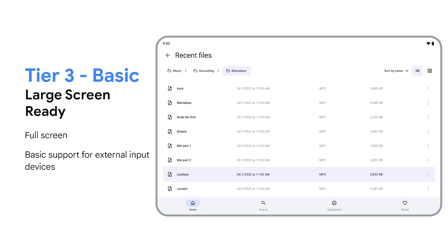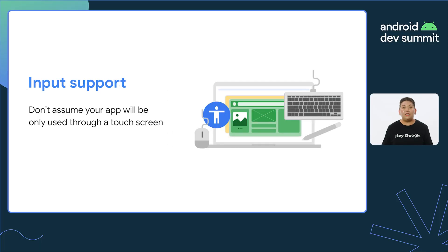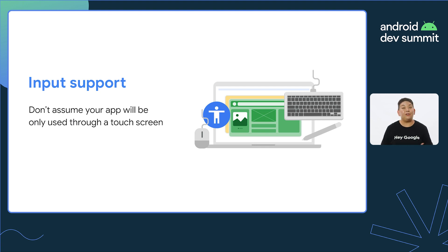Now let's look at what it takes to achieve large screen tier three. As a reminder, large screen tier three means your app runs full screen on all displays and is fully usable on all form factors. One often overlooked area is input support. Android apps on Chrome OS and on tablets are highly likely to be used with physical keyboards, mice, or trackpads. In tier three, your app should be fully usable with physical keyboards, mouse, or trackpads.